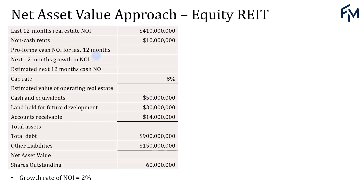We'll look at this example for an equity REIT. We have the details for the last 12 months' real estate NOI, the non-cash rents, the cap rate, cash and equivalents, land held for future development, accounts receivable, total debt, other liabilities, and shares outstanding. The growth rate of NOI is assumed to be 2%. We will compute the net asset value per share for this equity REIT. Note that the NOI given here is for the last 12 months — this is historical.